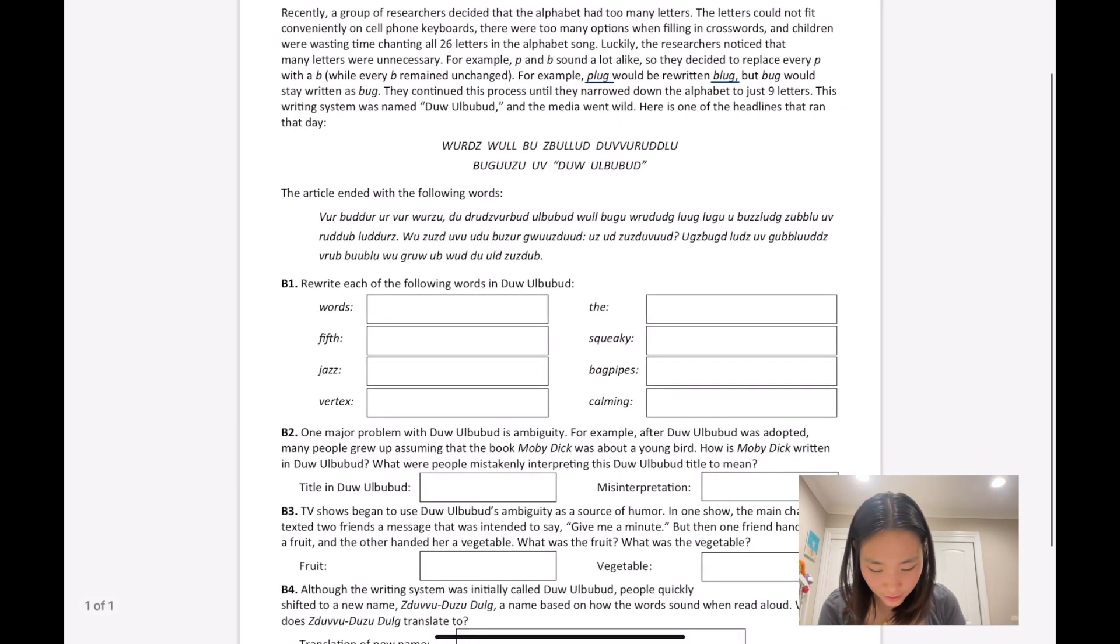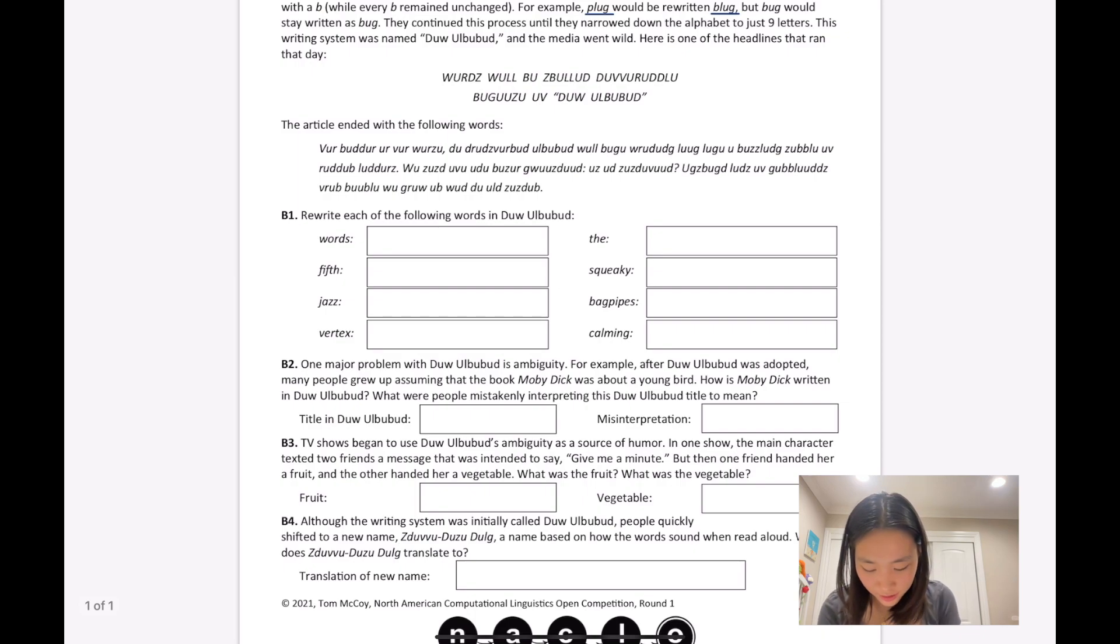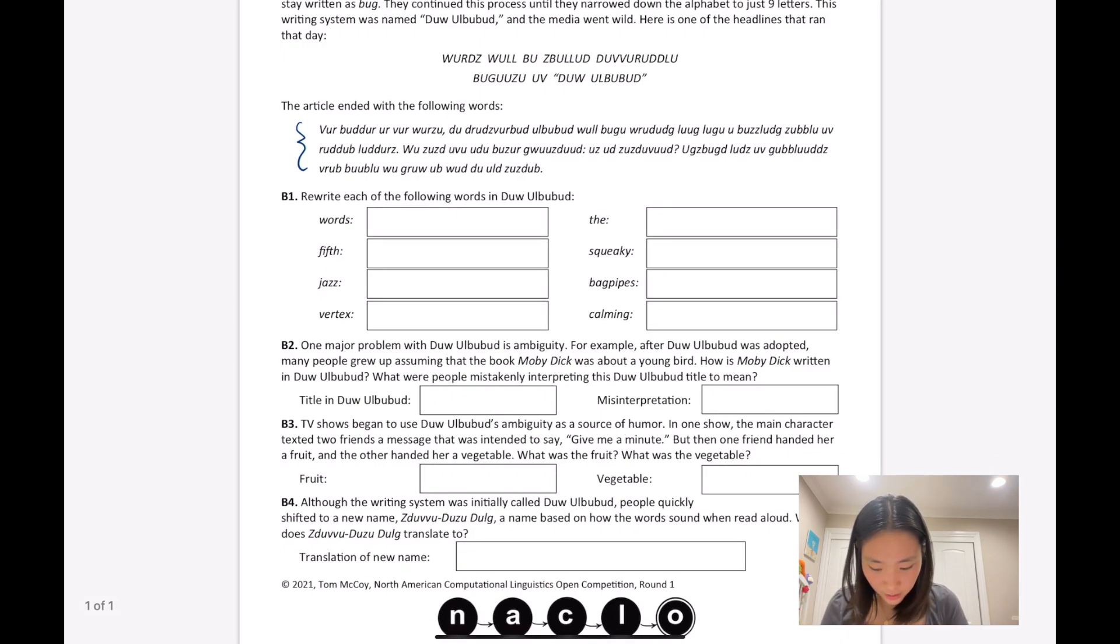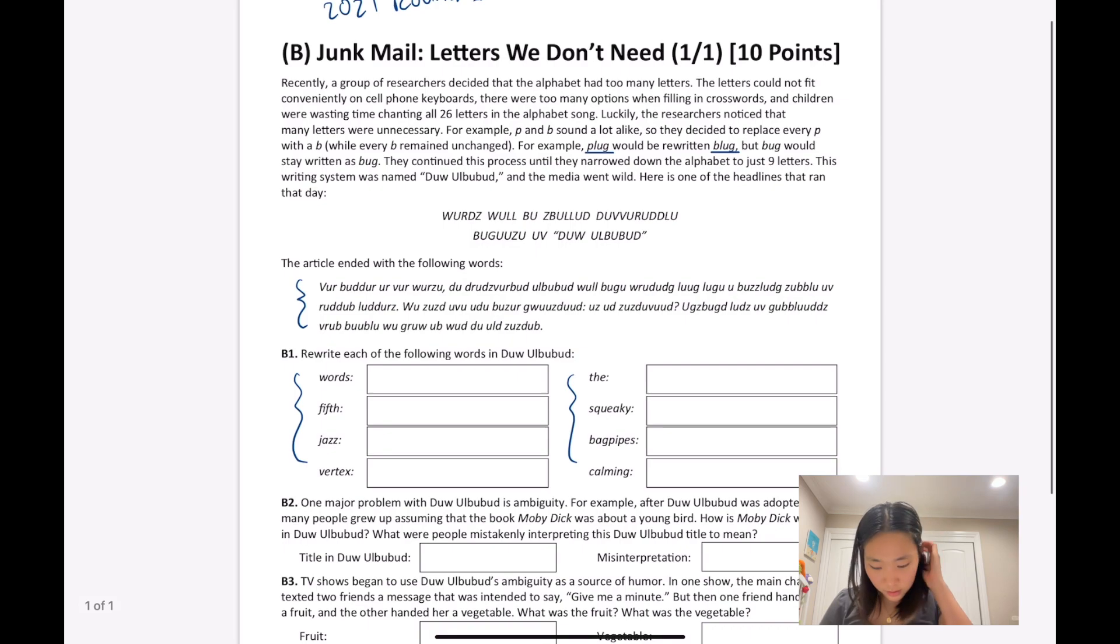Here is one of the headlines that ran that day: 'words will booze blood...' and then the article ended with this huge mess. The problem wants us to rewrite all of these words in this new alphabet and answer some questions. So how do we begin? Well, it gives us a clue - notice how p and buh sound very alike, and 'plug' would be rewritten as 'blug.'